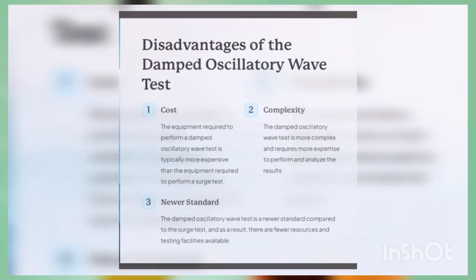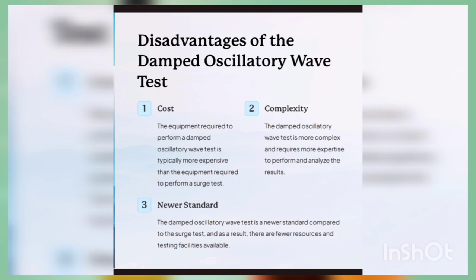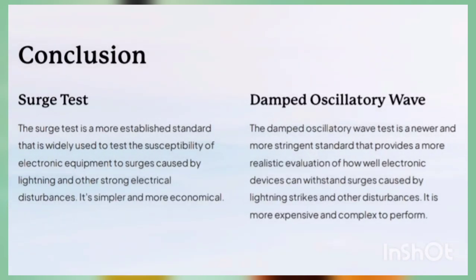The disadvantages of the damped oscillatory wave: first, cost — the equipment required to perform a damped oscillatory wave test is typically more expensive than the equipment for a surge test. Second, complexity — the damped oscillatory wave test is more complex and requires more expertise to perform and analyze. Third, newer standard — it is a newer standard compared to the surge test, so there are fewer resources and testing facilities available. In conclusion, the surge test is the more established standard widely used to test susceptibility of electronic equipment to surges caused by lightning and other strong electrical disturbances — it is simpler and more economical. The damped oscillatory wave test is a newer and more stringent standard that provides a more realistic evaluation of how well electronic devices can withstand surges caused by lightning strikes and other disturbances.